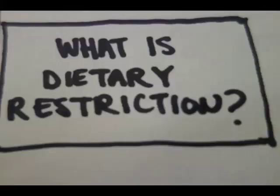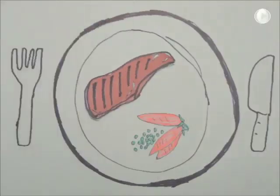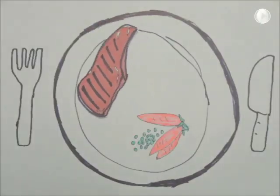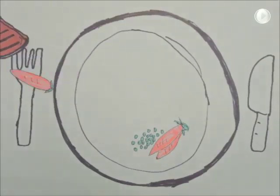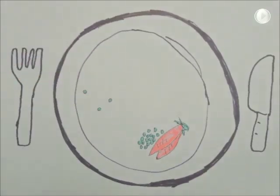Dietary restriction, which is sometimes referred to as caloric restriction, refers to feeding an animal a significantly reduced nutrient load without starvation. It was first studied in the 1930s during the Great Depression when governments were concerned about the effects of reduced food availability on human health.